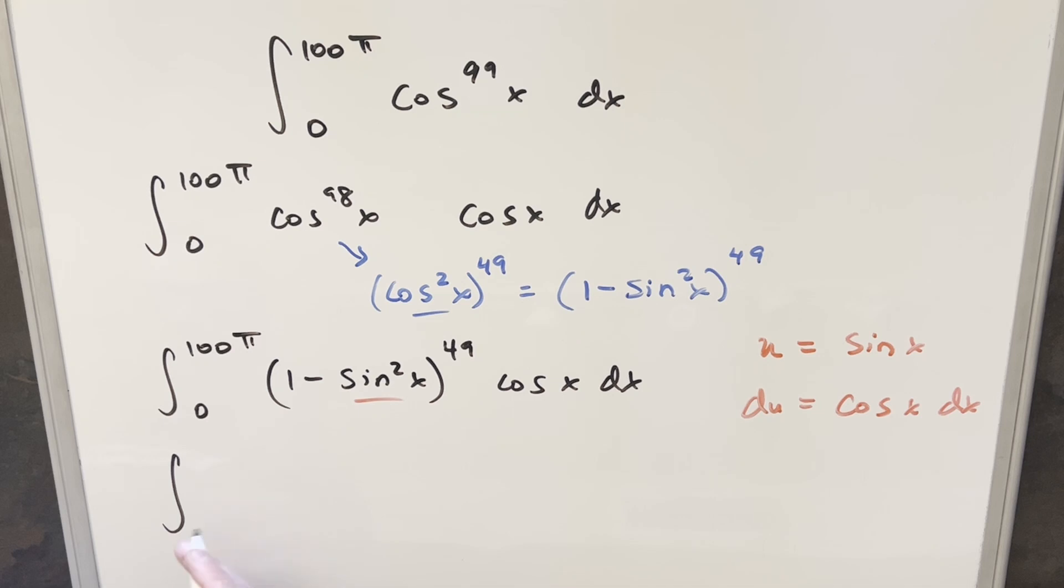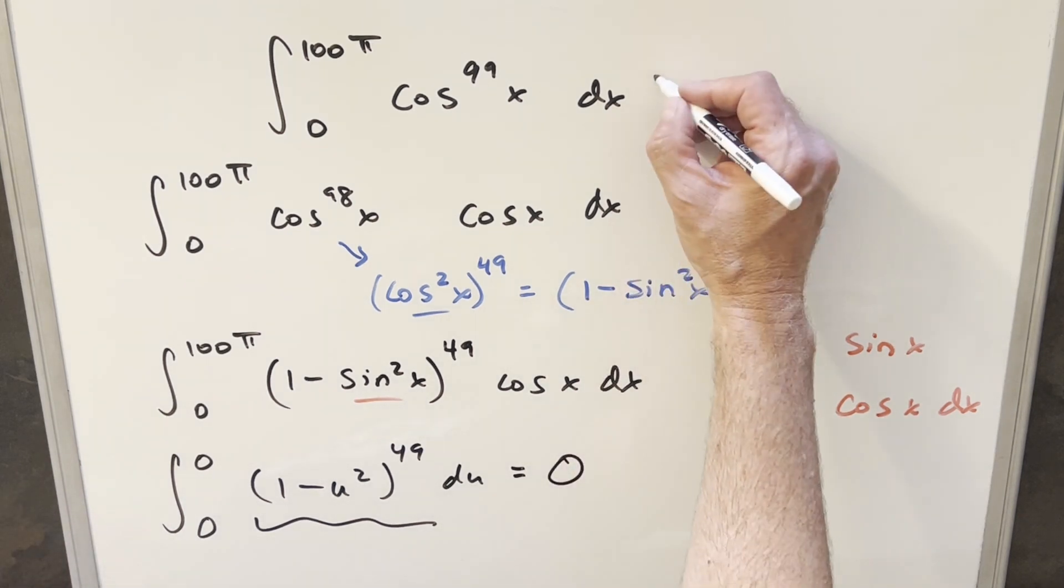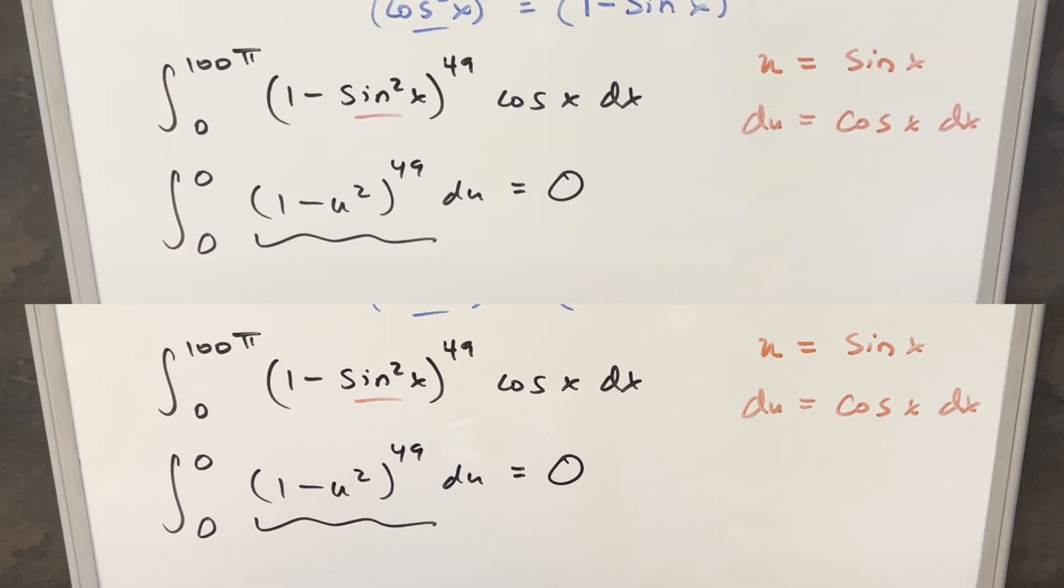So we go ahead with this, and we update our bounds first, plugging in 100π. Sine at 100π, any integer multiple π, this is going to be zero. Plug zero in at sine. Sine of zero is just zero. Doing all this, we end up with 1 minus u squared to the 49th du. But then notice we don't really care what this is right here, because our bounds are just zero to zero. There's no width to this integral, there's no area under the curve. This thing is just going to be zero. And so our solution just like that, we get a zero.